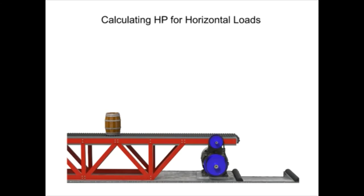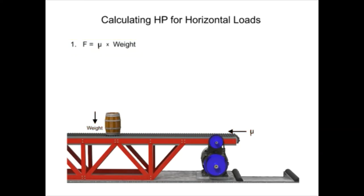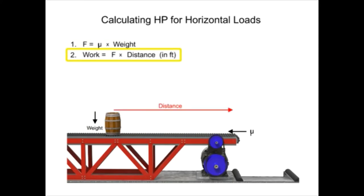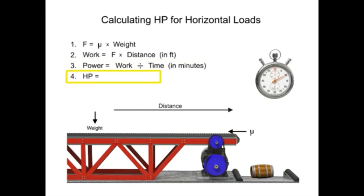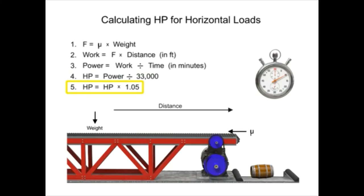Once this force is determined, it's easy to calculate the required horsepower to move a horizontal load. First, find the horizontal force required by multiplying the coefficient of friction by the weight. Then, determine the amount of work required by multiplying the force by the distance in feet to be moved. Next, calculate the power by dividing the work by the time in minutes. Then, convert to horsepower by dividing the result by 33,000. Finally, add 5% to compensate for estimated friction losses in the motor or cylinder.